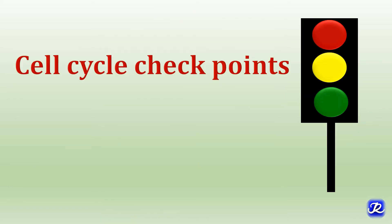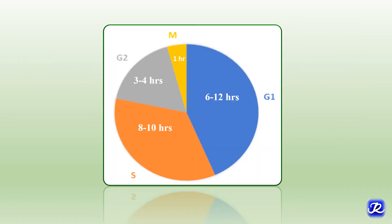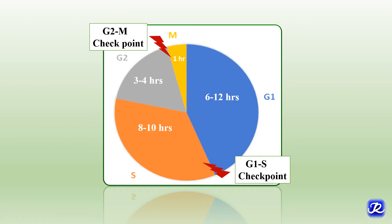Now let's talk about cell cycle checkpoints. There are three checkpoints or control points for regulation of the cell cycle: the G1/S checkpoint, the G2/M checkpoint, and the M checkpoint. Entry into different phases is strictly regulated at these checkpoints, and cell damage is checked and repaired before the cell is allowed to enter into the next phase.